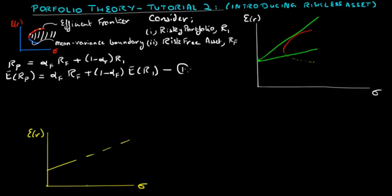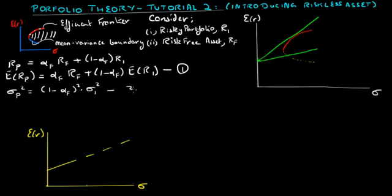Let this be equation 1. Since RF is constant, its volatility is going to be 0, and hence its covariance with the risky asset is also going to be 0. Therefore, the variance of this portfolio equals 1 minus alpha F squared times the variance of the risky asset. Let this be equation 2.